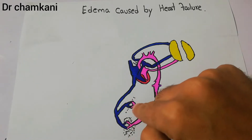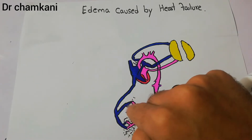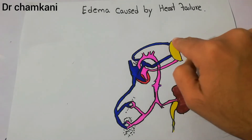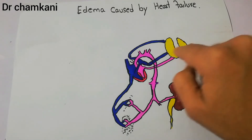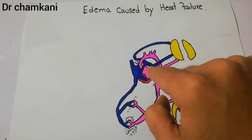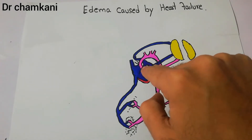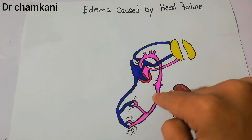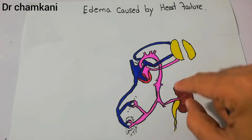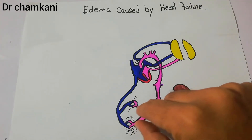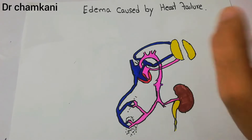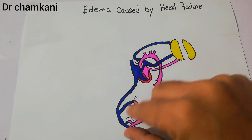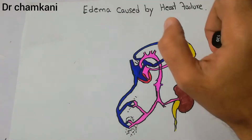Normally, deoxygenated blood returns from the tissues to the heart. The heart pumps that blood into the lungs where the blood gets oxygenated. The oxygenated blood returns toward the heart, and the heart then pumps this oxygenated blood into the different body tissues. The tissues utilize the oxygen and nutrients, and then the deoxygenated blood returns to the heart. This is what normally happens and there is no edema normally.